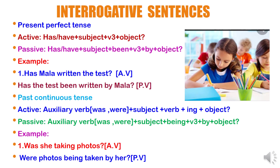Past continuous tense in interrogative. In active voice: auxiliary verb (was/were) plus subject plus verb plus ing plus object. In passive voice: auxiliary verb (was/were) plus subject plus being plus V3 plus by plus object. Example — in active voice: 'Was she taking photos?' In passive voice: 'Were photos being taken by her?' — 'photos' is plural so use 'were'. 'Being' stays as it is. 'Taking' changes to 'taken' (V3). 'She' changes to 'her' as a pronoun.